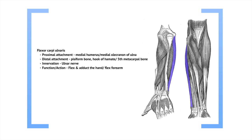The flexor carpi ulnaris originates at the medial aspect of the humerus as well as the medial olecranon of the ulna, which is basically the bony prominence of the elbow. It inserts into the pisiform bone, the hook of hamate, as well as the fifth metacarpal bone. This muscle is innervated by the ulnar nerve, and its function is to flex and adduct the hand as well as flex the forearm.